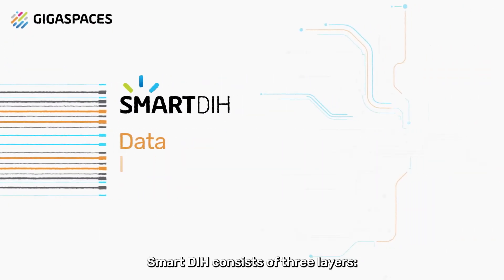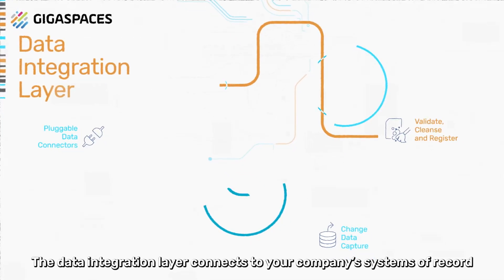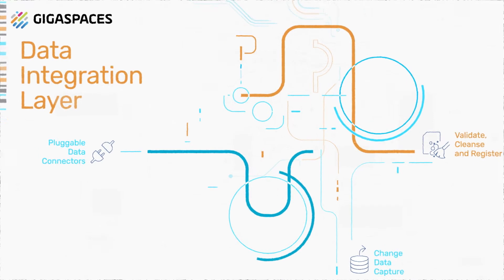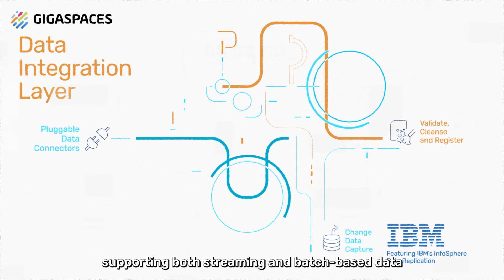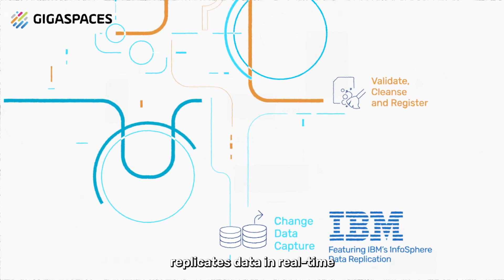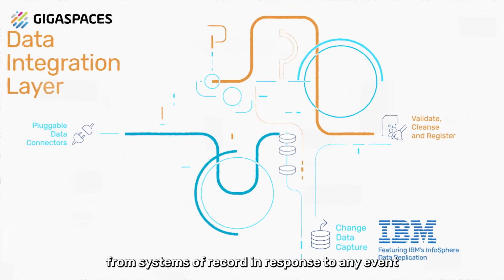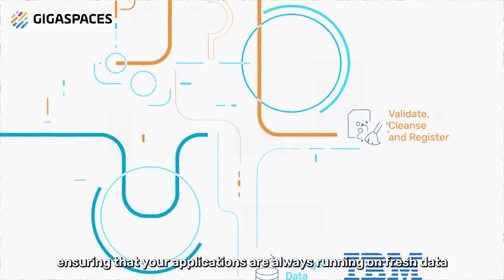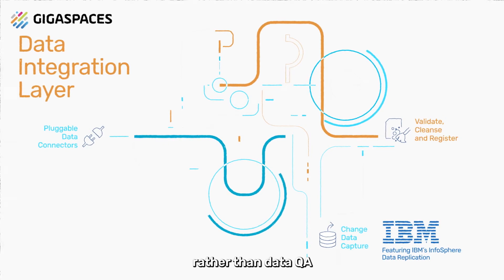Smart DIH consists of three layers. The data integration layer connects to your company's systems of record using an event-based approach. It features pluggable data connectors supporting both streaming and batch-based data. An embedded change data capture tool replicates data in real-time from systems of record in response to any event, ensuring that your applications are always running on fresh data, and freeing developers to focus on business logic rather than data QA.